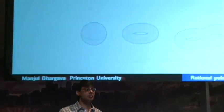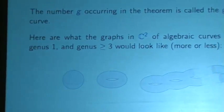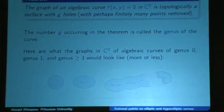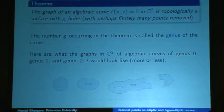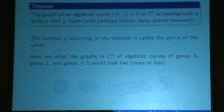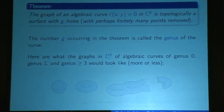This is a purely topological notion. We're just graphing the polynomial in two variables in ℂ² and counting the number of donut holes — that's the genus. The amazing thing is that that number of donut holes, which is a topological notion, actually says a lot about the structure of rational points — the structure of rational solutions to f(x, y) = 0. This is one of the amazing connections between number theory and topology: that the topological notion of genus should have any connection to the structure of rational points.